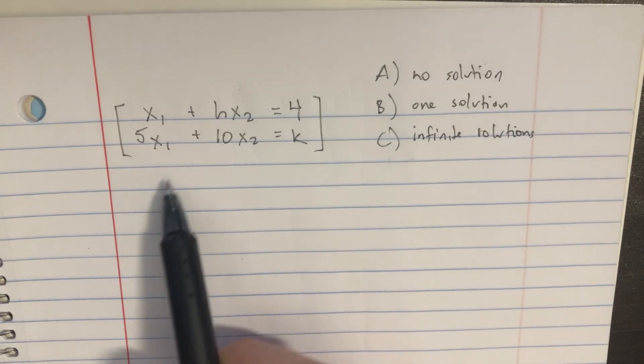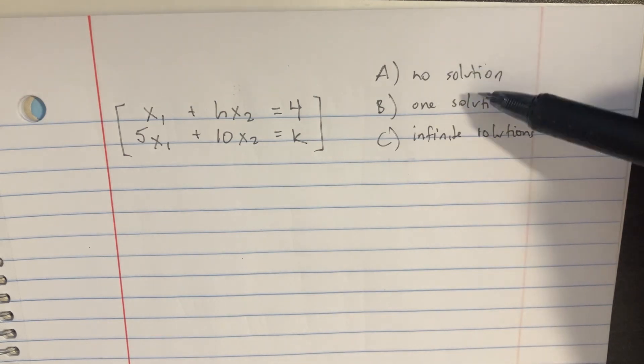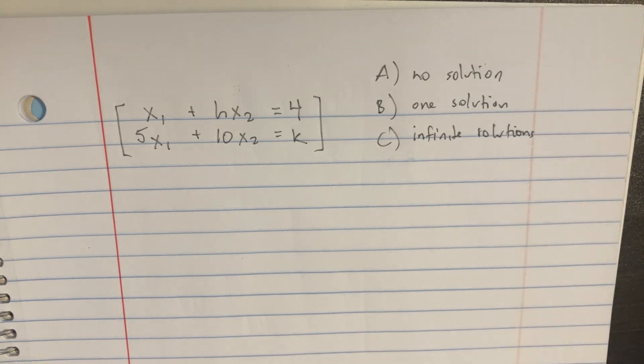We're given two equations and we're asked to figure out what values of h and k would provide no solution, one solution, or infinite solutions.